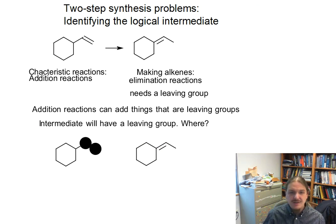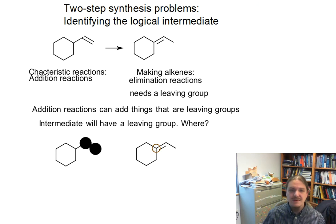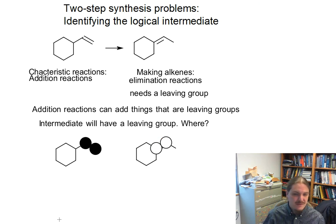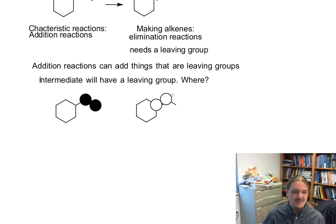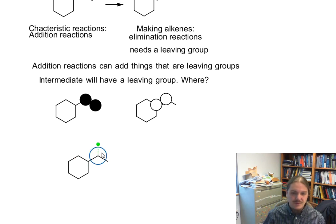If we're talking about an elimination reaction to make this other alkene, we know from our study of elimination reactions that one of the two carbons where the leaving group was is going to be part of the alkene. So in order to make this alkene, we need to have a leaving group on one of these two carbons. What did these two structures have in common? We're going to put a leaving group at this position.